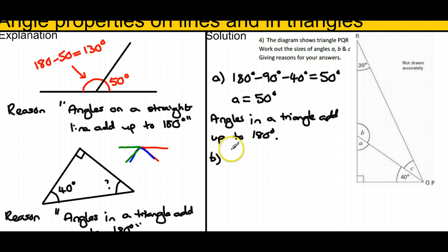For b, we've got a straight line that contains a and b. If we do 180 minus our answer for a, which was 50, then we get b as 130. The reason is 'angles on a straight line add up to 180.'